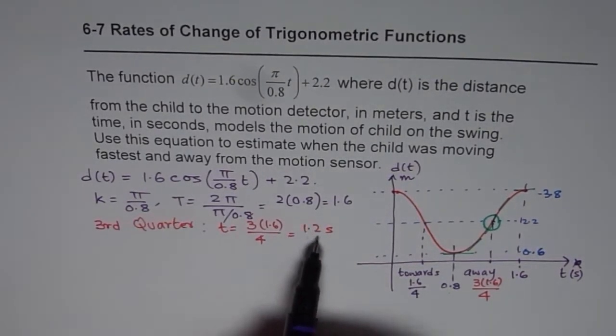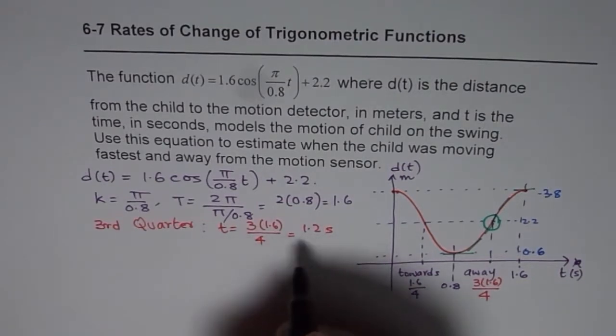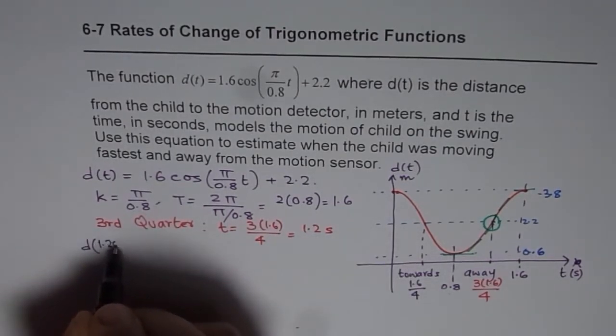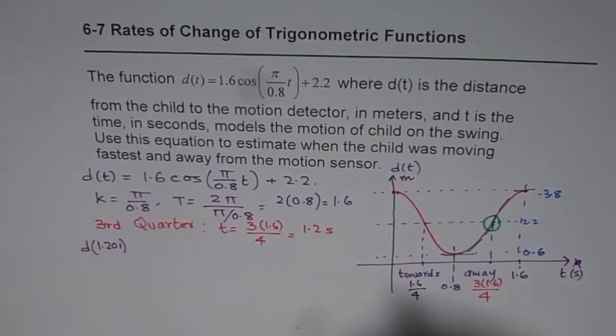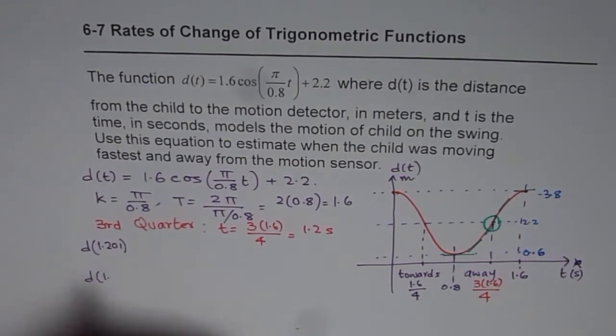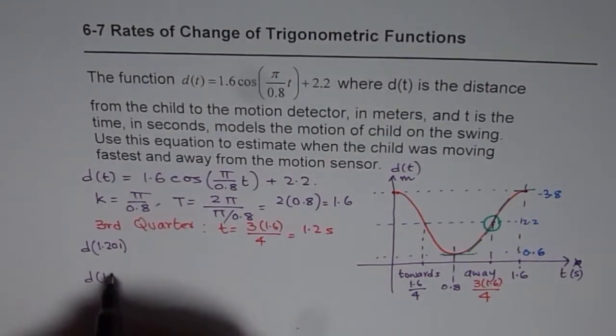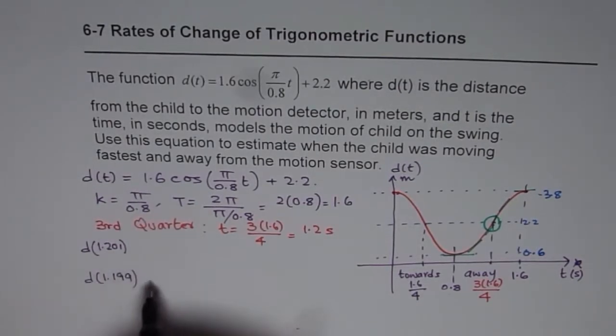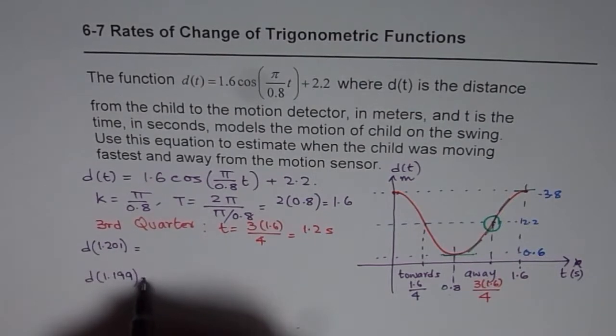Now to find the value we can use difference quotient. We can use a point which is very close to this on the right and on the left side. So you can calculate the value which is d(1.201) for example and also d(1.199). The difference of these values divided by difference between these two will give you instantaneous rate of change.